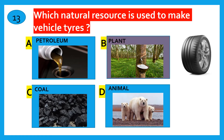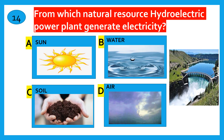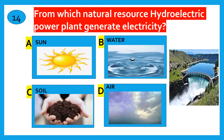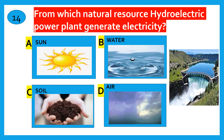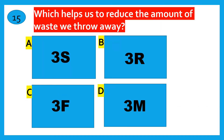From which natural resource do hydroelectric power plants generate electricity? Sun, water, soil, air. The correct answer is water.